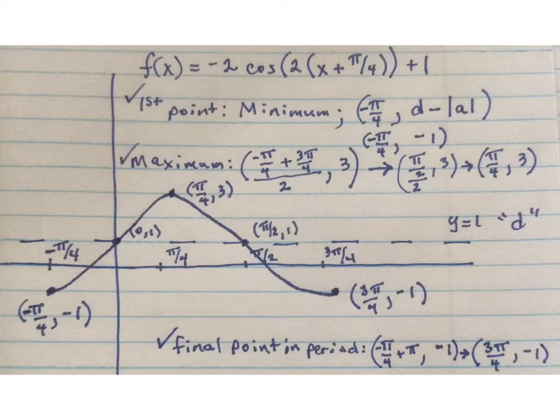Here we have all of our information put together in one place. The first point that we found was our very first minimum, and that was the point negative π over 4, negative 1. The second point that we found was actually the last point in our period, which was 3π over 4, negative 1. The third thing that we found in this one was our maximum. Our maximum is at π over 4, 3. And then we found our final two points, which were on the d-line, 0, 1, π over 2, 1. And lastly, it's just a matter of taking and drawing the smooth curve through those five points.